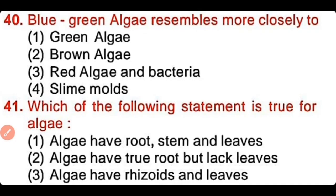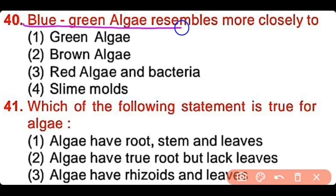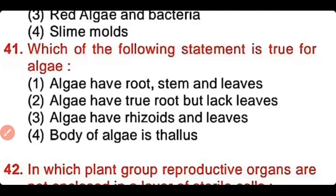Question number 40: Blue-green algae resemble more closely green algae, brown algae, red algae and bacteria, or none? The correct answer is option 3. Blue-green algae resemble more closely red algae and bacteria because they have similar types of pigments.